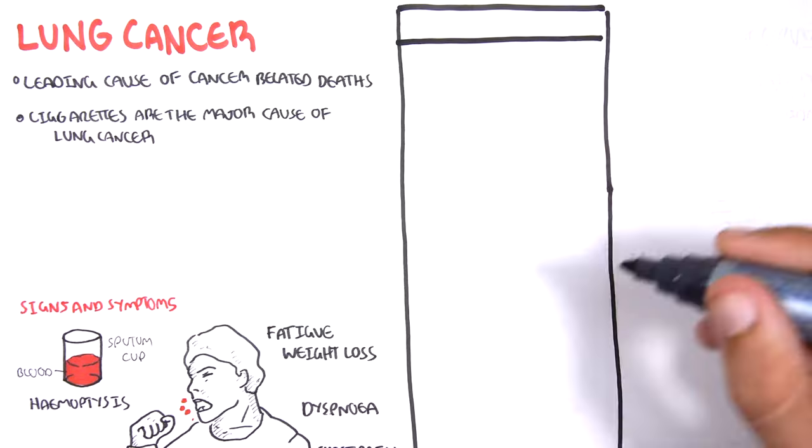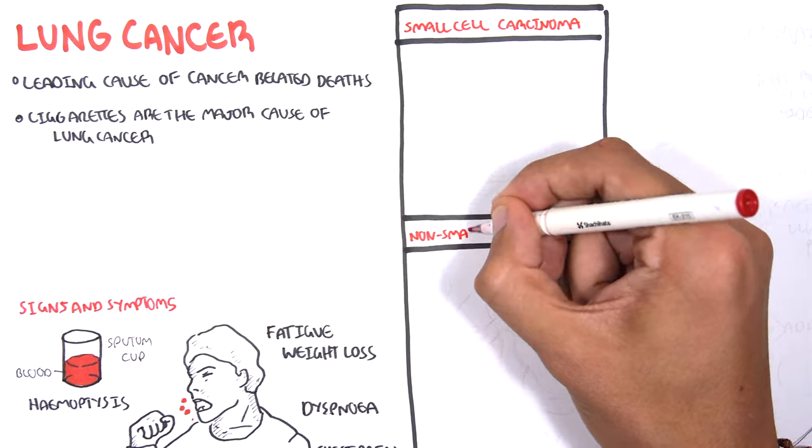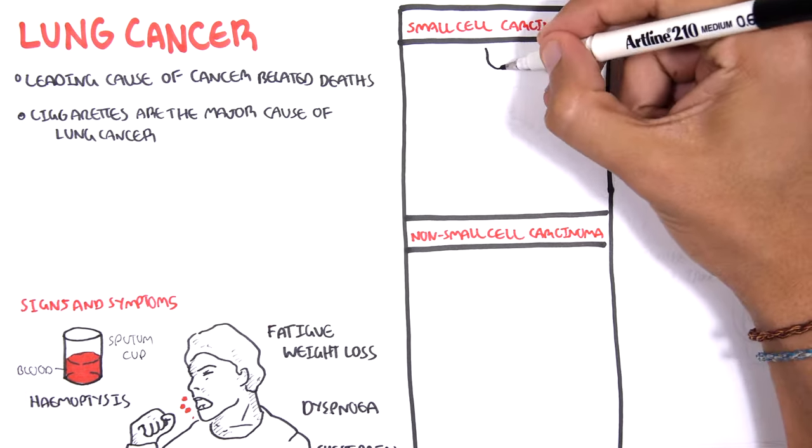Lung cancer can be divided into two main groups. These are small cell carcinoma and non-small cell carcinoma. Let us first look at small cell carcinoma.